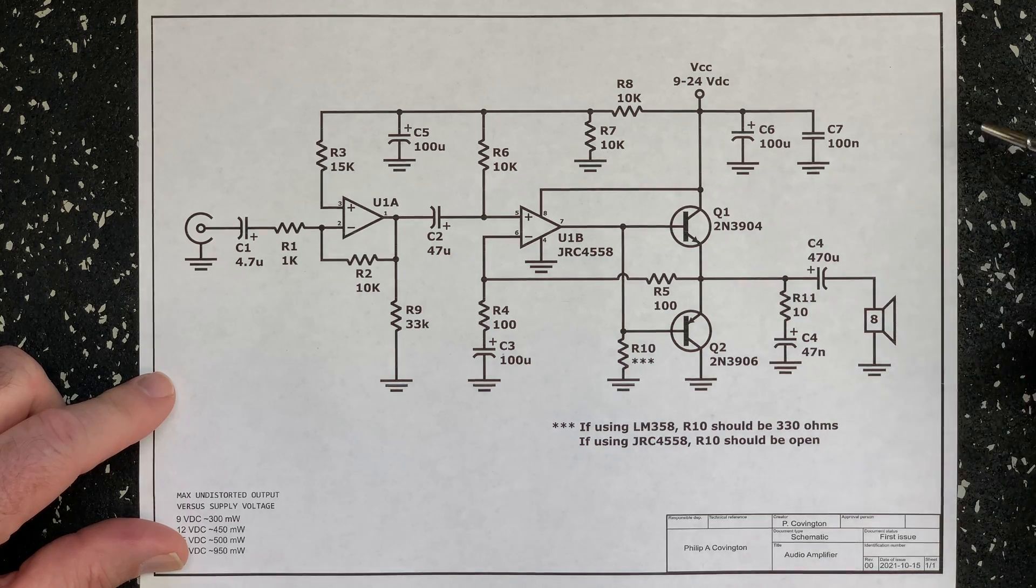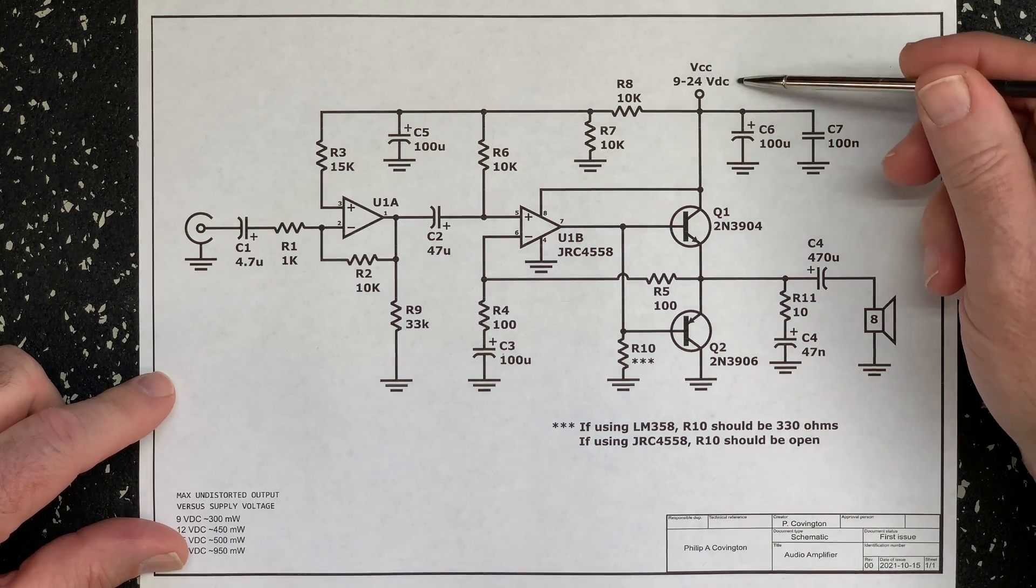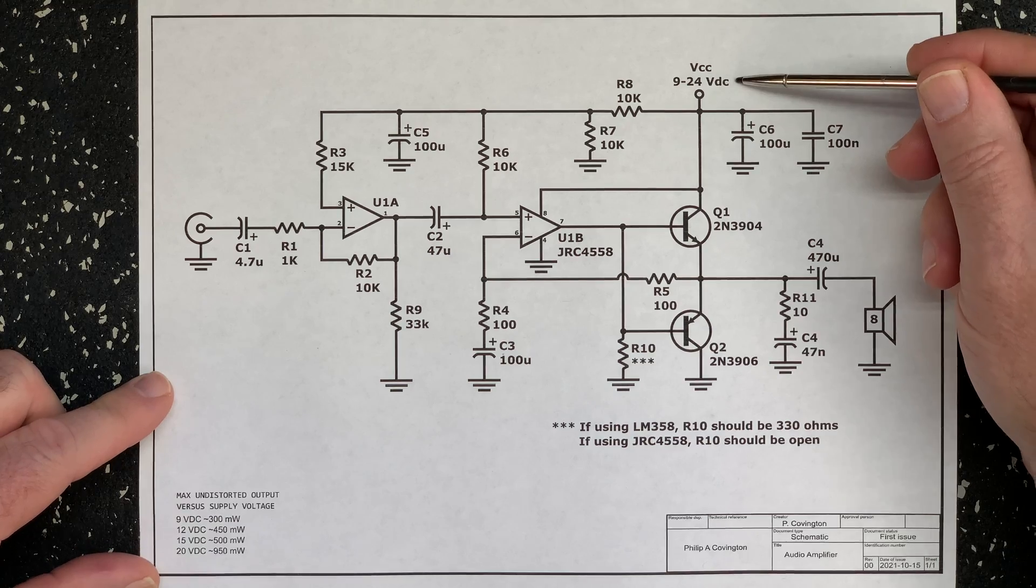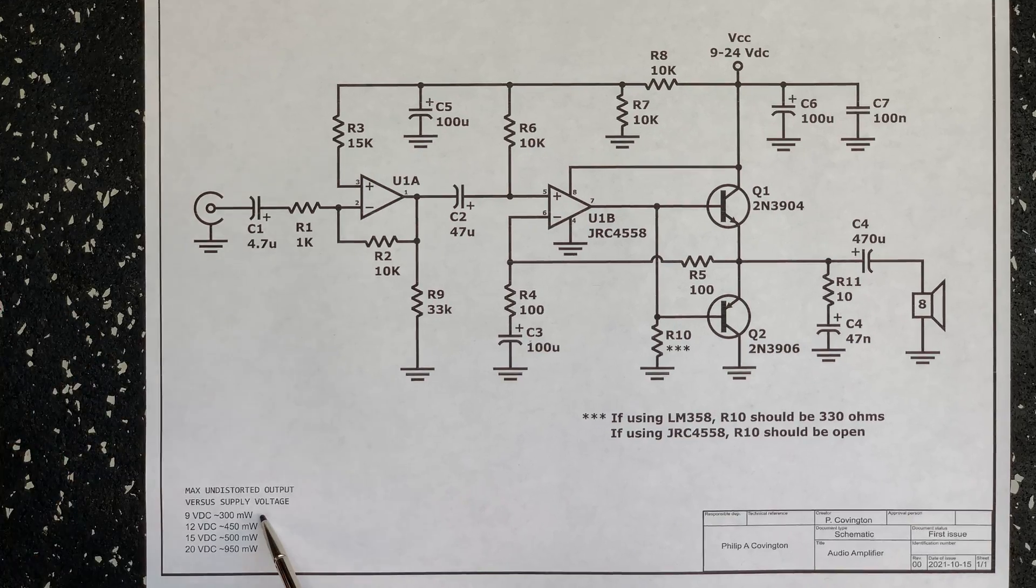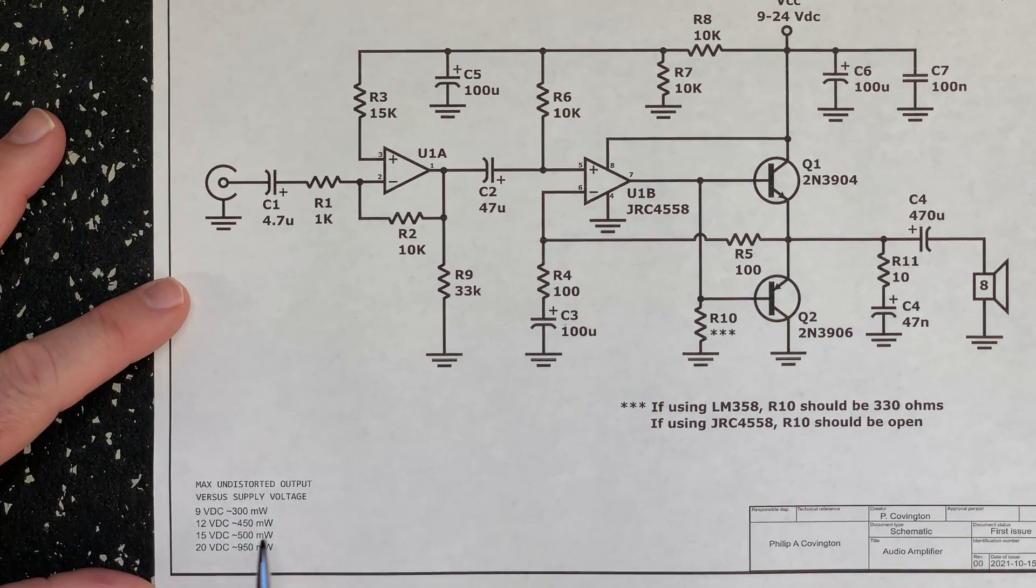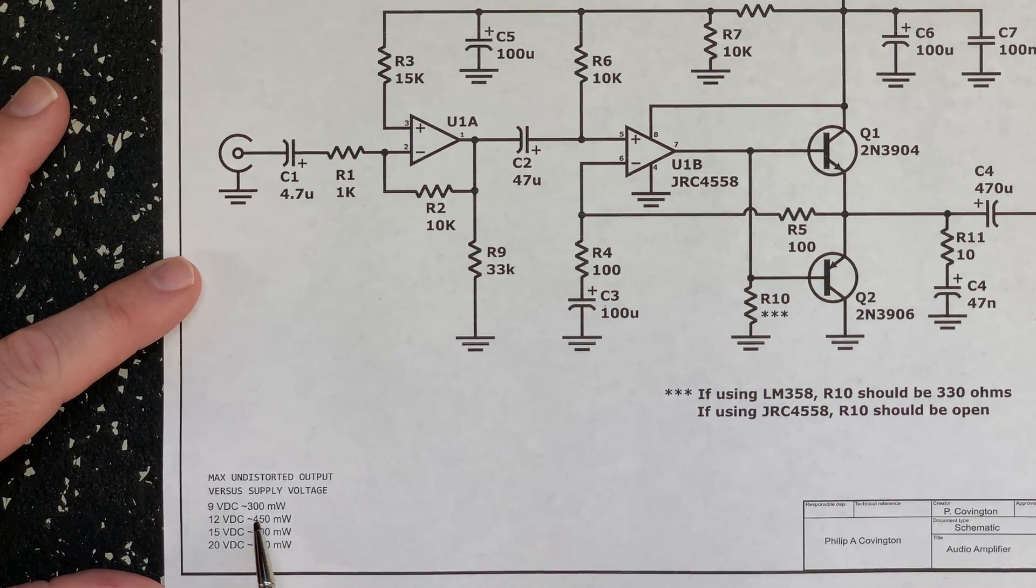This circuit works well with supply voltages from 9 volts up to 24 volts DC. When run on 9 volts, the maximum undistorted output power into the 8 ohm speaker was around 300 to 350 milliwatts.